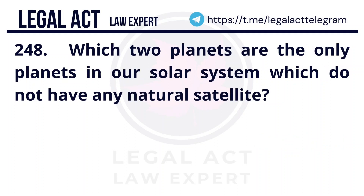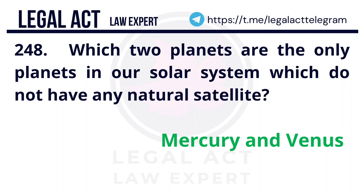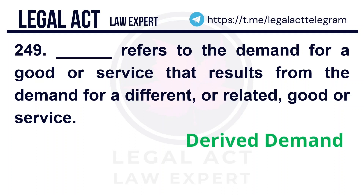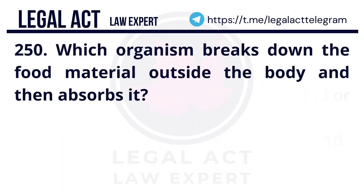Question 248: Which two planets are the only planets in our solar system that do not have any natural satellite? Answer is Mercury and Venus. Question 249: 'Dash' refers to the demand for a good or service that results from the demand for a different or related good or service.